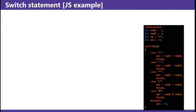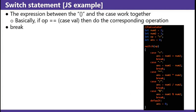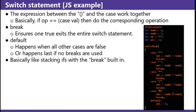Switch statement — this is a JavaScript example. The expression between the parentheses and the case work together. In this case, the operation variable and what's in the case variables are compared. If the plus sign equals the plus sign, add the two numbers. If the minus sign equals the minus sign, subtract the numbers. If operation equals the multiplication sign, multiply the numbers, and so on. The break ensures that one true case exits the entire switch statement. The default happens when all other cases are false, or happens last if no breaks are used — because if no breaks are used, it goes through every single statement like you're stacking ifs.